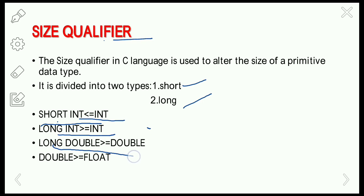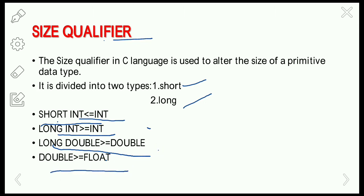Long double is greater than or equal to double, and double is greater than or equal to float. So long will always be greater than or equal to its base type, whereas short will be less than or equal to it.